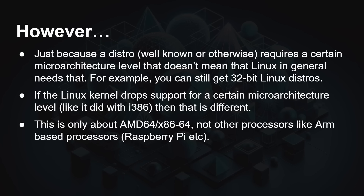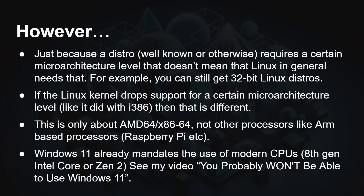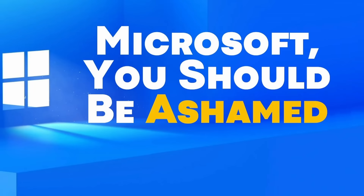This is only about 64-bit x86 processors from Intel or AMD — it has nothing to do with, for example, ARM processors in a Raspberry Pi or your smartphone. And of course, Windows 11 itself has already mandated the use of modern CPUs: 8th generation Intel Core or Zen 2 is required to officially run Windows 11 — though there are workarounds. See my video 'You probably won't be able to use Windows 11' for more details.